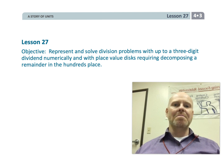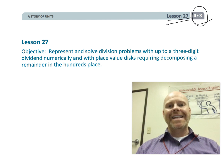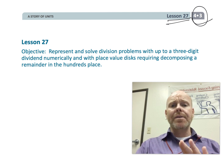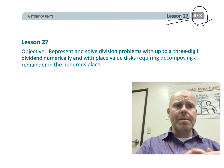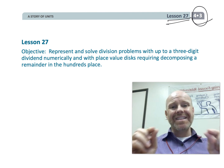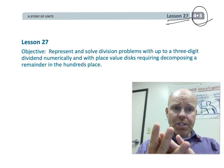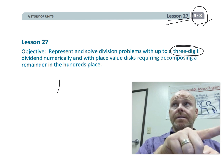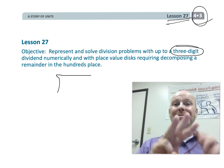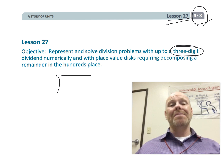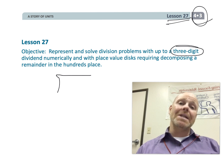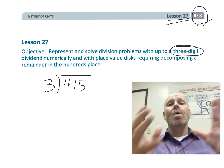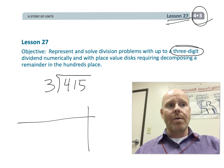This is fourth grade module 3 lesson 27. In this lesson we are going to be going back to the standard algorithm of division, only this time we're going to have slightly larger problems. We're going to have three digits inside that house — the dividend is going to be three digits. The divisor, the number outside of the house, is still going to be one digit. And we're going to be connecting the dots, that place value technique, with the standard algorithm.